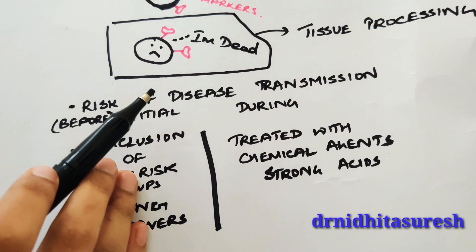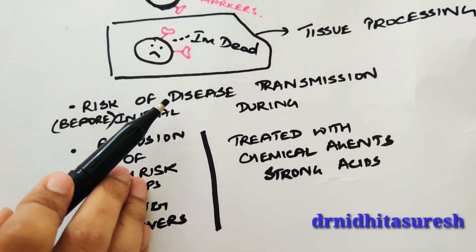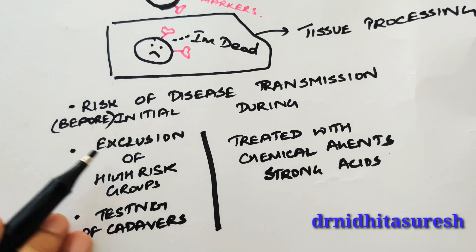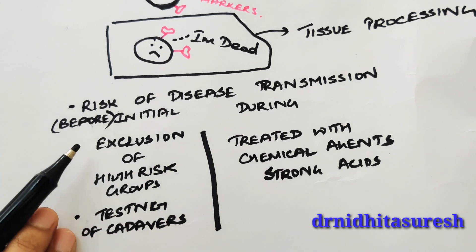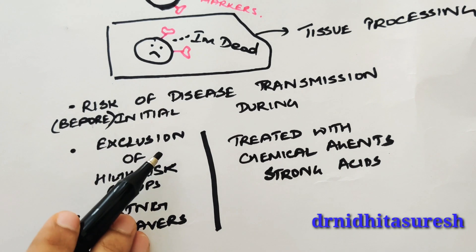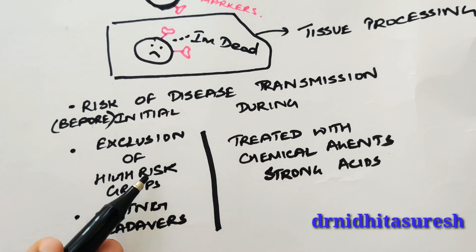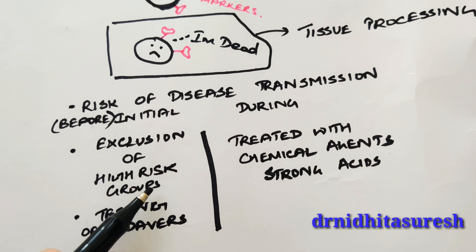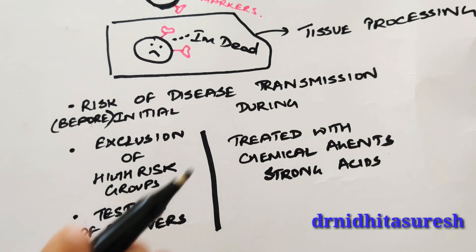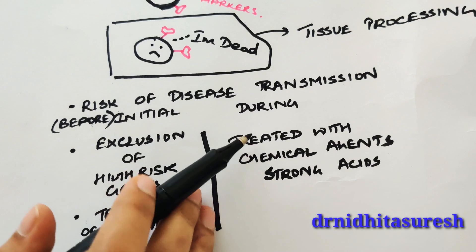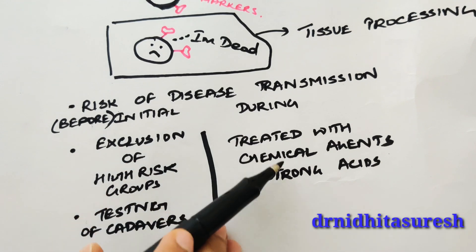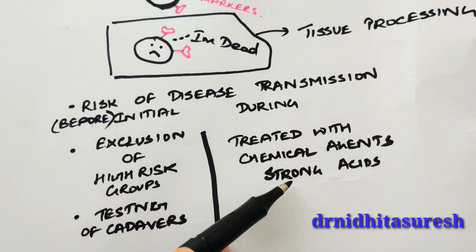The risk of disease transmission is managed by excluding donors in high-risk groups, testing cadavers for infections or malignancies, and treating the graft with chemical agents and strong acids to inactivate any viruses.